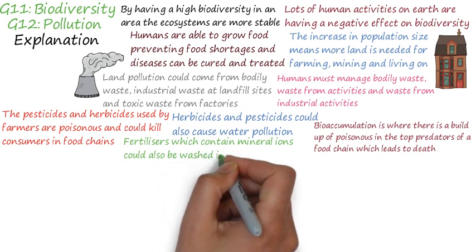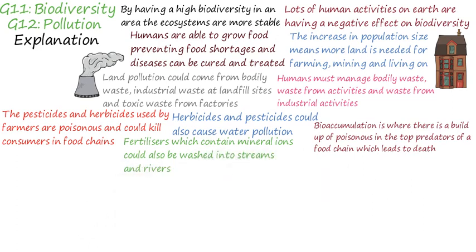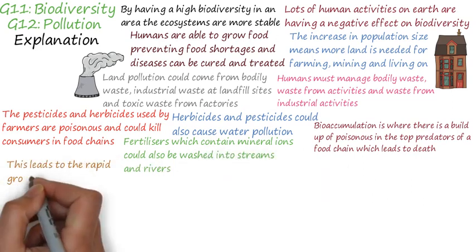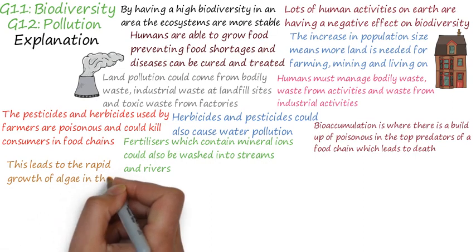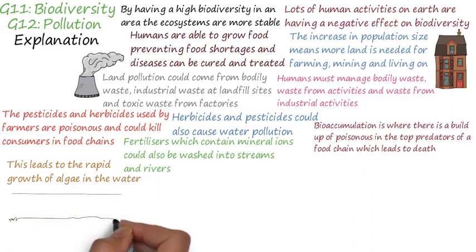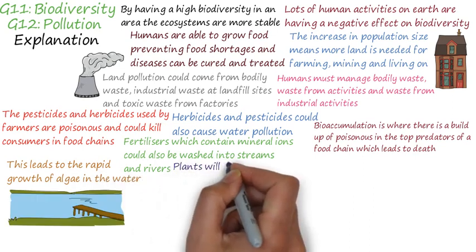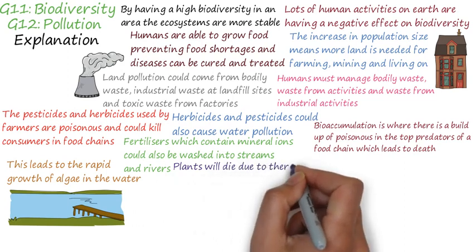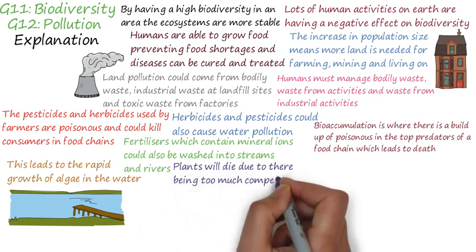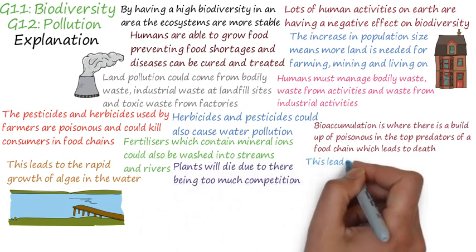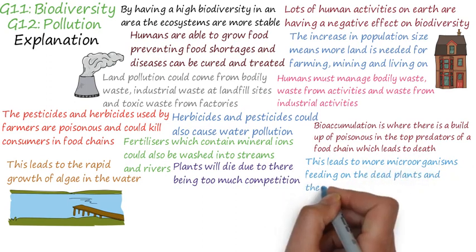Another thing used by farmers is fertilizers. These fertilizers could also be washed into streams and rivers, and they will contain large amounts of nitrates and other mineral ions. If these get into the water systems, it could lead to the rapid growth of algae in the water.